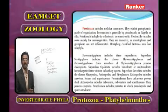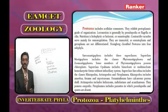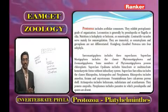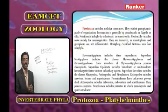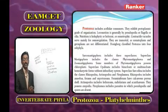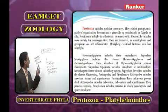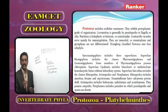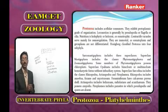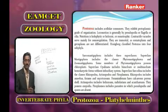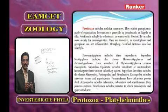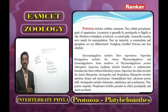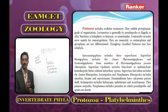In Zoomastigophora, majority are parasites. Examples include Trichomonas and Trichonympha. In the superclass Mastigophora, asexual reproduction is by longitudinal binary fission. Because of longitudinal binary fission, the two daughter individuals are identical — this is called symmetrogenic.